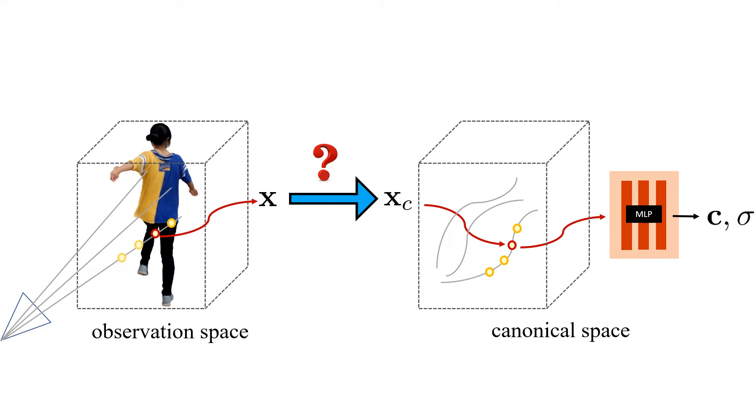To render an image for comparing against input, we volumetrically render the subject in the observation space but bend the rays with the learned motion field to the canonical space where we query sample color and density from the MLP. As a result, we are solving for a coherent canonical appearance.